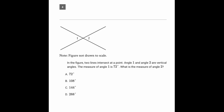Question number four is asking us about vertical angles, and those would be angles in this type of arrangement, like angles 1 and 2 here. We need to know that vertical angles are congruent — in other words, they have equal measures to one another, so angle 1 is equal to angle 2.